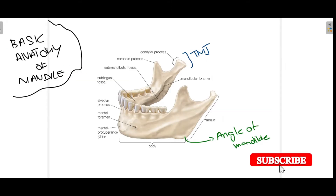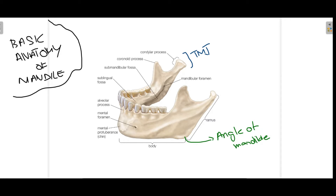Starting with the basic anatomy of the mandible, which is very important to know before learning detailed anatomy. In this diagram you can see the condylar process, which articulates with the base of the skull to form the temporomandibular joint. There is also a notch present between the coronoid process and the condylar process. This triangular-shaped structure is known as the coronoid process.